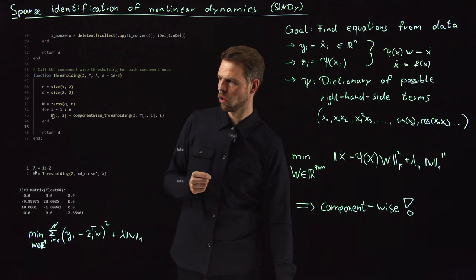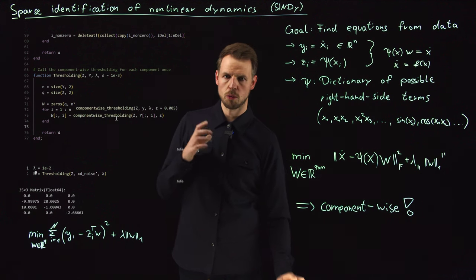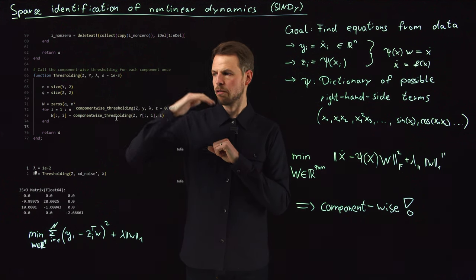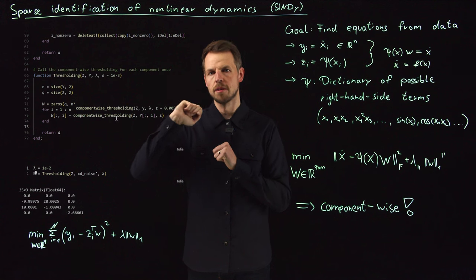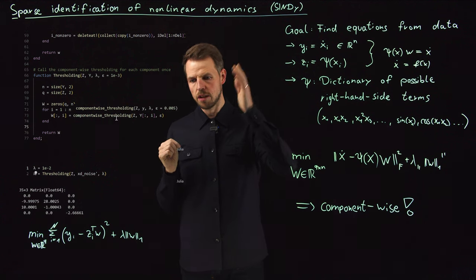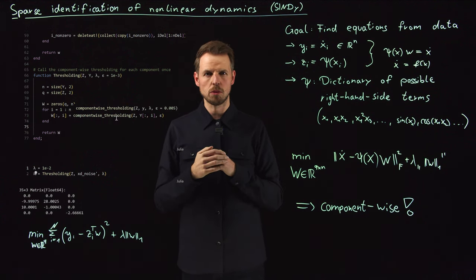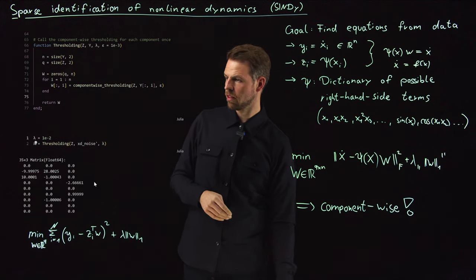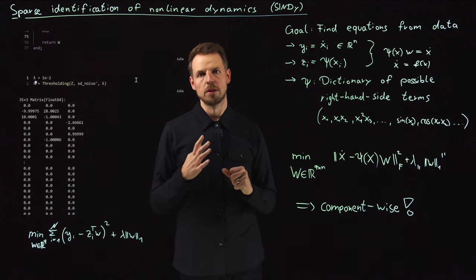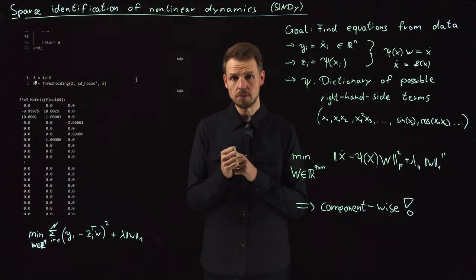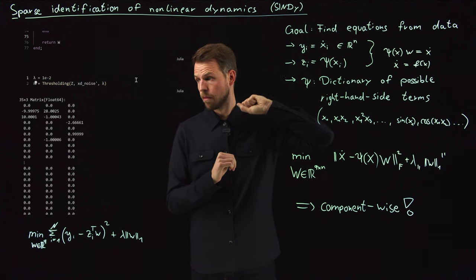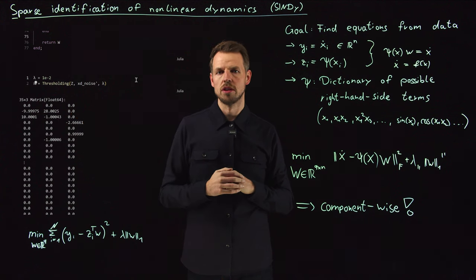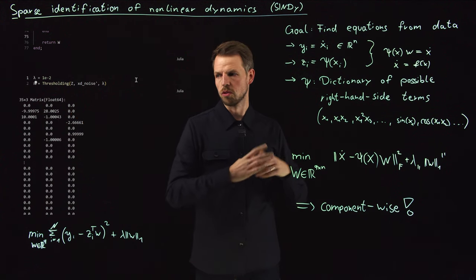The threshold algorithm just calls the component-wise thresholding. What you're doing is this goes to component 1, 2, 3 and for each of them you're calling the lasso multiple times and then sequentially if some value is smaller than epsilon, which was 10 to the minus 3 in my case, you simply set it to zero. And if we do this, this is the result we get. This is something we can actually be very happy with. We have used noisy data in x and in x dot and we have identified the coefficients to a very high accuracy using the thresholding plus lasso example.